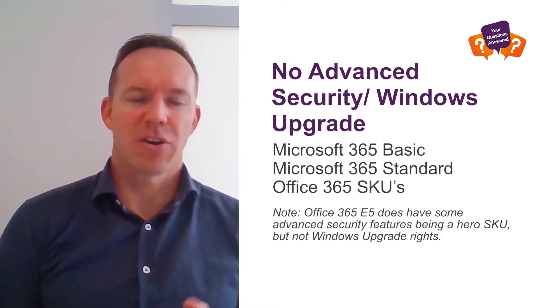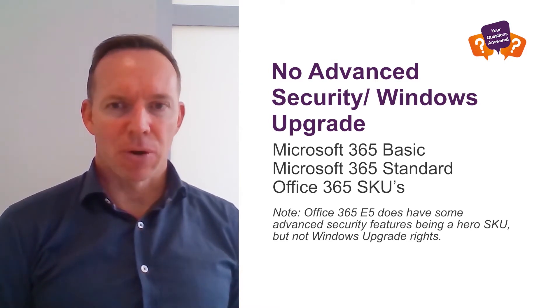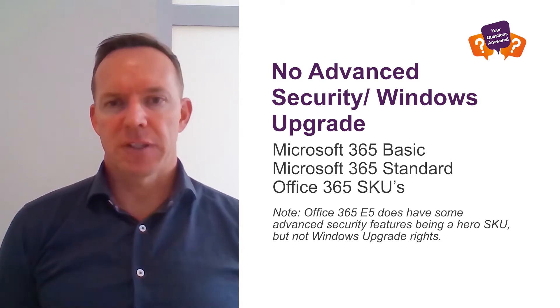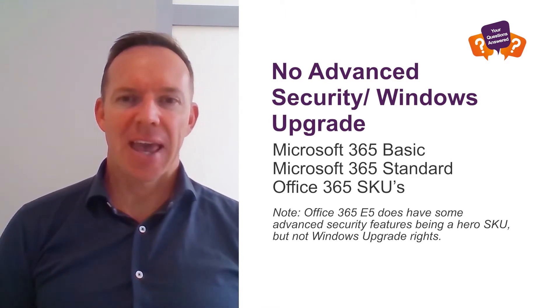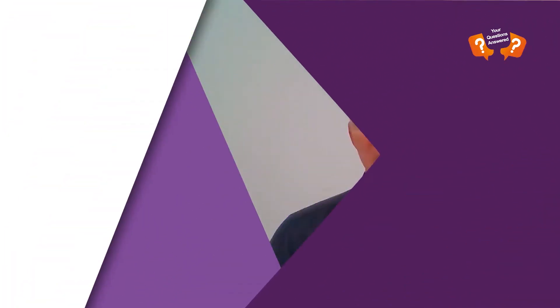It's very important to be aware of that difference between Office 365 and Microsoft 365, but it's not as straightforward as you'd think — because not all those new Microsoft 365 SKUs include Windows desktop upgrade rights or the advanced security features. Specifically, Microsoft 365 Basic and Microsoft 365 Standard do not include those upgrade rights or advanced security. Neither do the Office 365 SKUs mentioned, with the special note that E5 does have some security benefits.